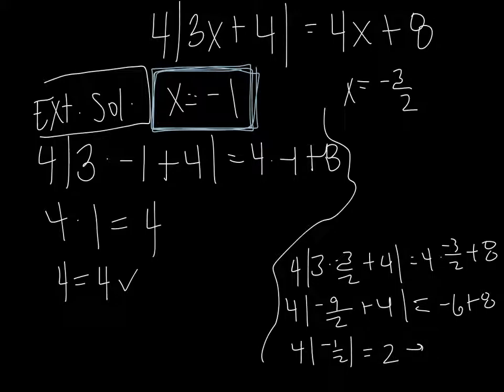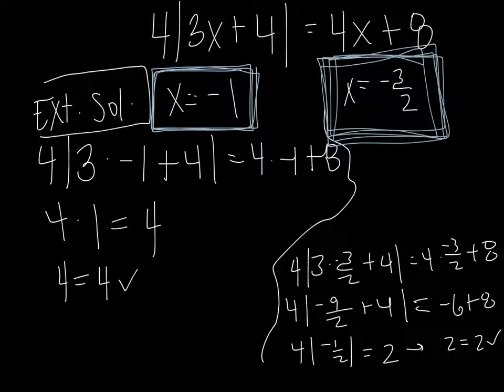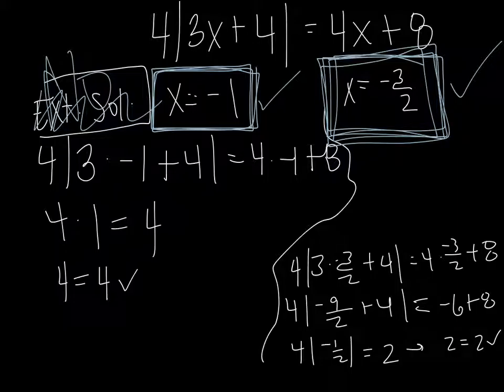Because the absolute value is positive, half of 4 is 2. 2 does equal 2. Yes, that's true. Remember, that's not your solution. Your solution is up here. What you found originally, these are just your checks to make sure they're true. And they're both true, which means there are no extraneous solutions. We have two solutions that are real solutions to this problem. I hope this helps, guys.